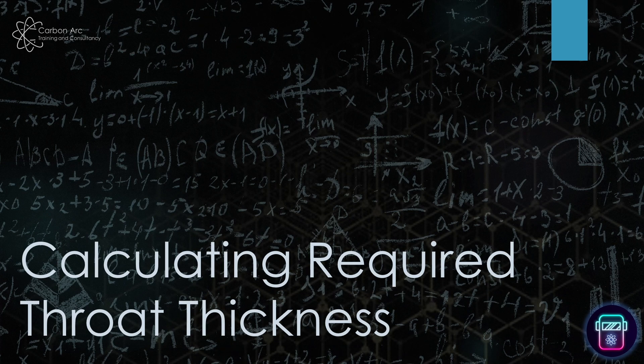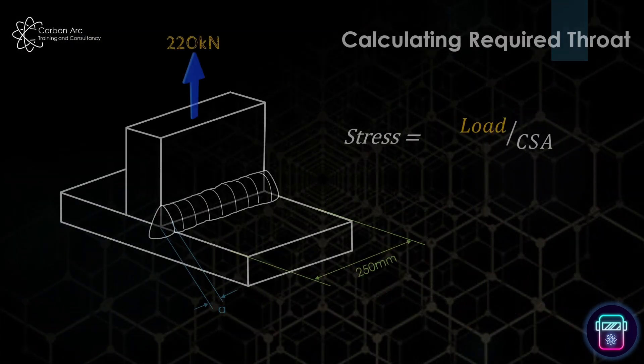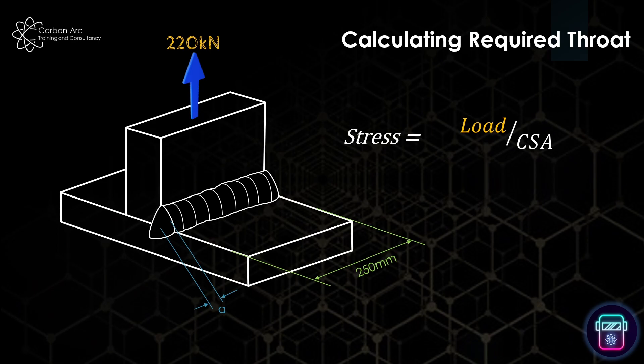So now we can look at the questions based around calculating the throat thickness required for a certain material under a certain stress and a certain loading level. In this example here, I want to find what my design throat thickness should be in a given situation. We're applying again a load of 220 kilonewtons and our weld length is 250 millimeters.